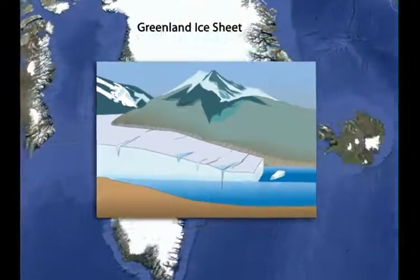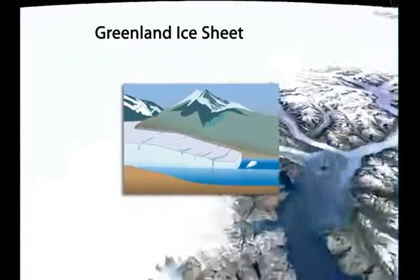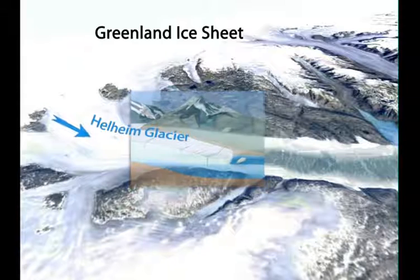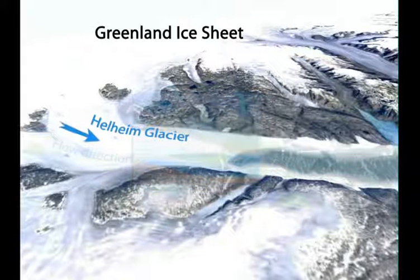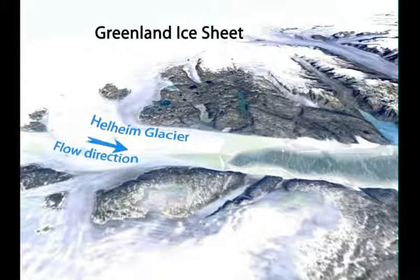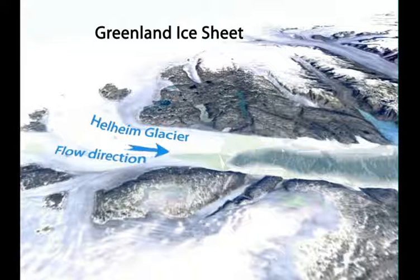Glaciers accumulate ice at higher levels and migrate downslope due to gravity. This animation, modeled after Helheim Glacier in East Greenland, illustrates ice draining from the Greenland ice sheet to the ocean.